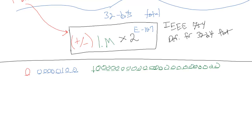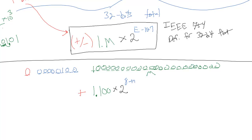Let's decode what this means. We start with the sign bit: since it's 0, that means we're going to be positive. So we have positive 1 dot whatever is in the mantissa field — it's going to be 1.100... going on with zeros. So we're not going to write those in because they don't change the value.